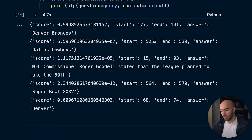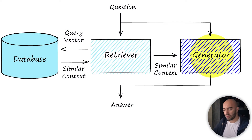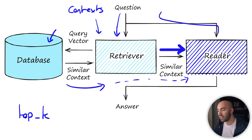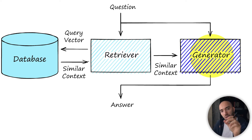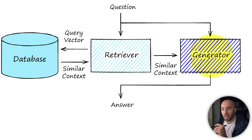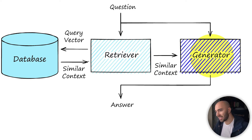Now let's move on to the abstractive QA pipeline. Looking at the chart, it's very similar to the extractive QA pipeline except it has a generator model instead of a reader model — that's the big yellow block. Rather than extracting 'Denver Broncos' directly from the text, the generator model looks at both the question and context and generates its own answer based on them, which is interesting. Super easy to set up — let's get back to the code.